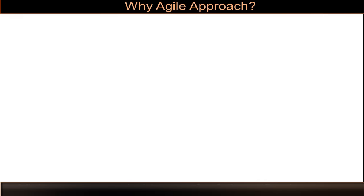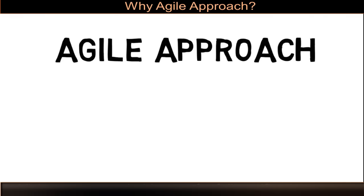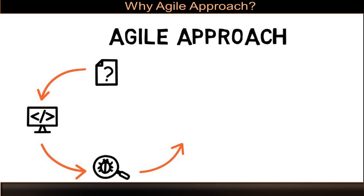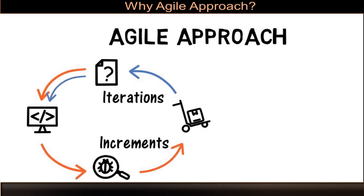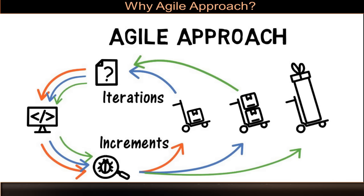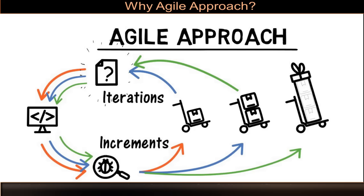Now, let us look at the most preferred approach to deal with complexity — it is the agile approach. Here, we deliver smaller increments as well as refine the website through iteration. The customer's feedback and change in requirements are adapted through multiple iterative and incremental deliveries. Iterations and increments continue until the final product is delivered. Due to this multiple delivery model, the project team can adapt to changing requirements. Agile approach is the most preferred approach for complex adaptive problems.